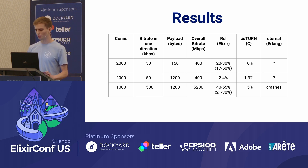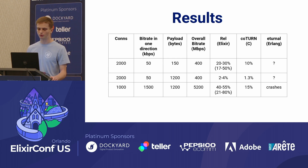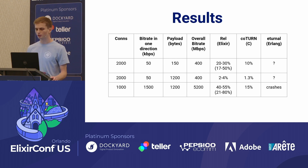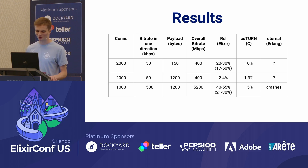The results: REL takes mostly between 20 and 30% CPU usage, with some spikes up to 50%. Coturn is a stable 10%. In the case of turnar, we were not able to set up that number of connections — not because of CPU usage, but I think it's some kind of configuration bug. However, I put turnar here because in the last scenario it crashes, and I'd like to talk about that later.